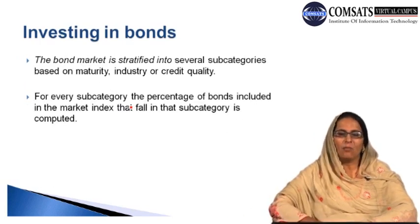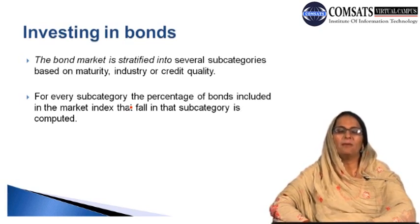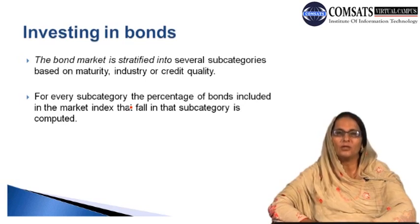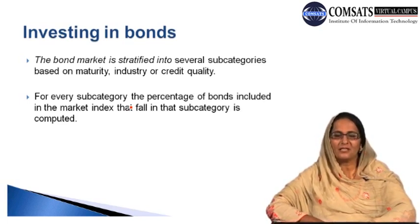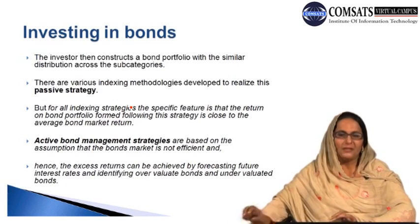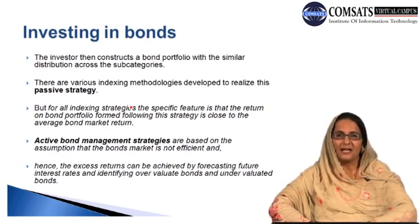The bond market is stratified into several subcategories based on maturity, industry, or credit quality. For every subcategory, the percentage of bonds included in the market index that fall in that subcategory is computed. The investor then constructs a bond portfolio with a similar distribution across subcategories. There are various index methodologies developed to realize this passive strategy.